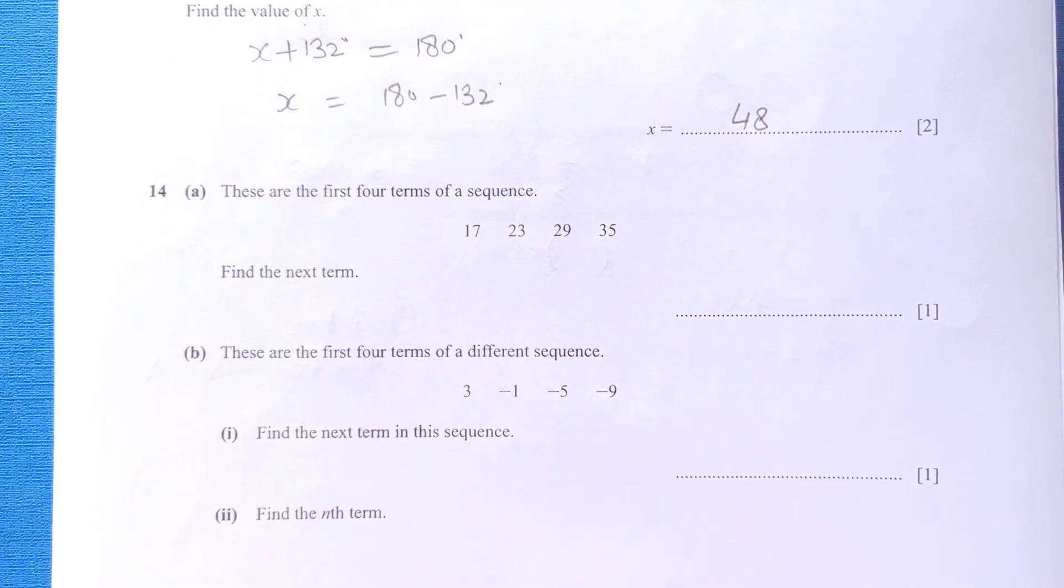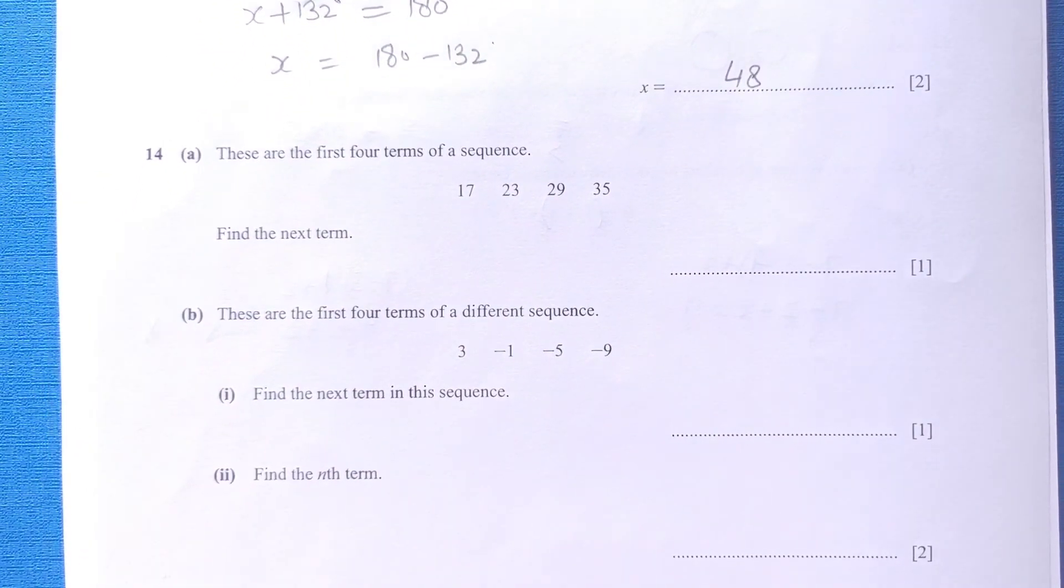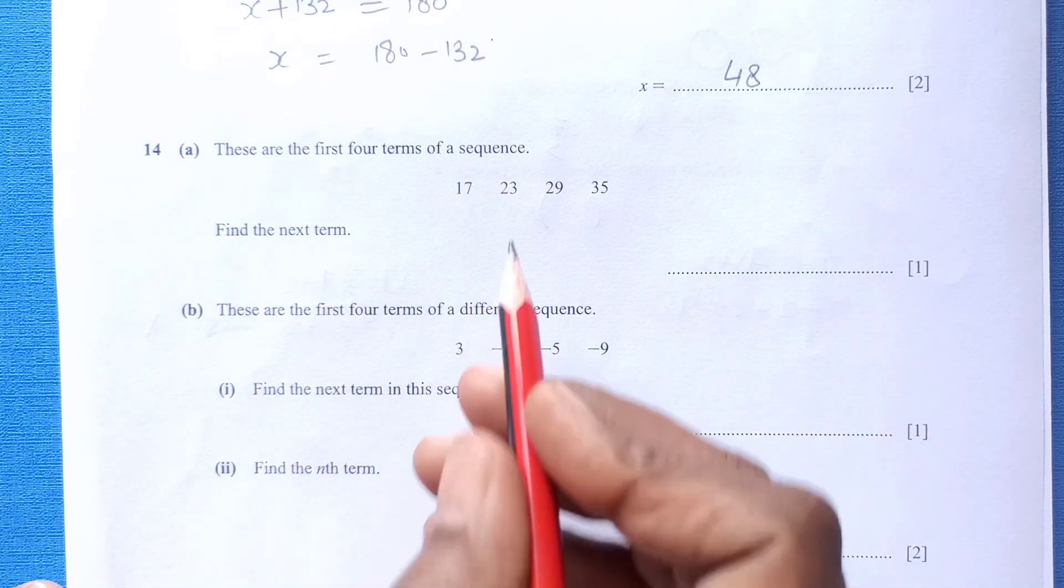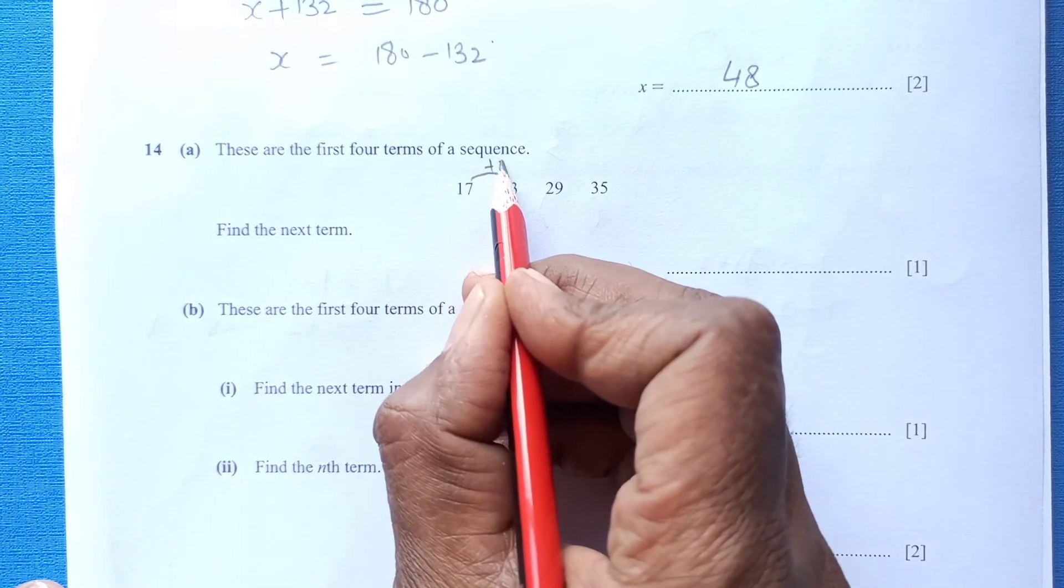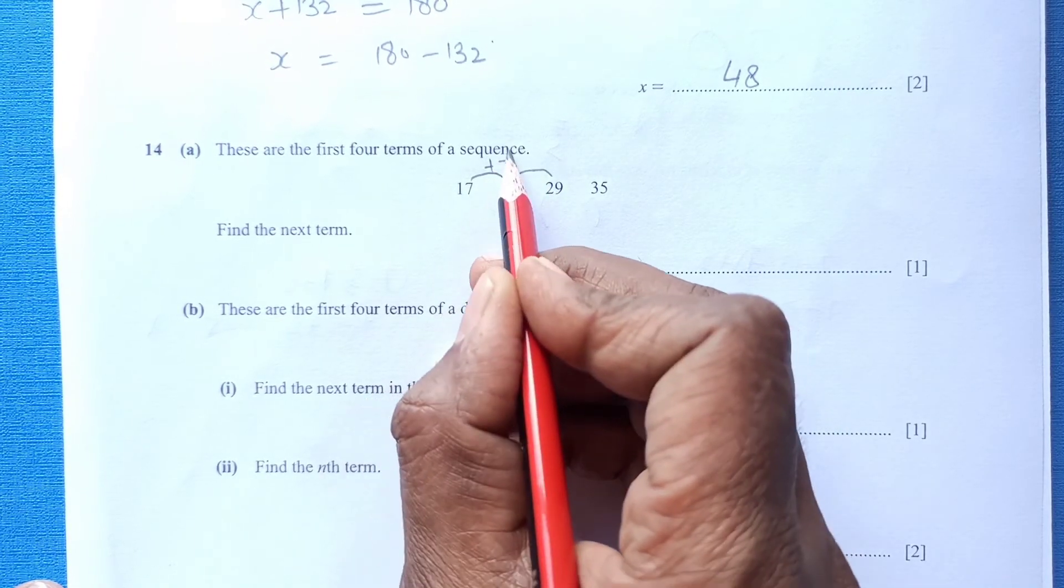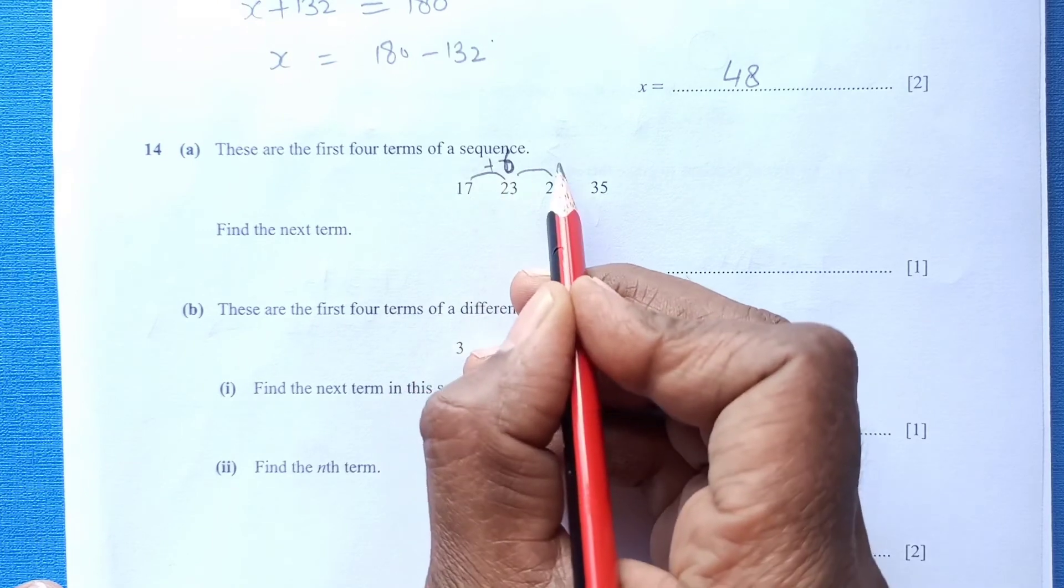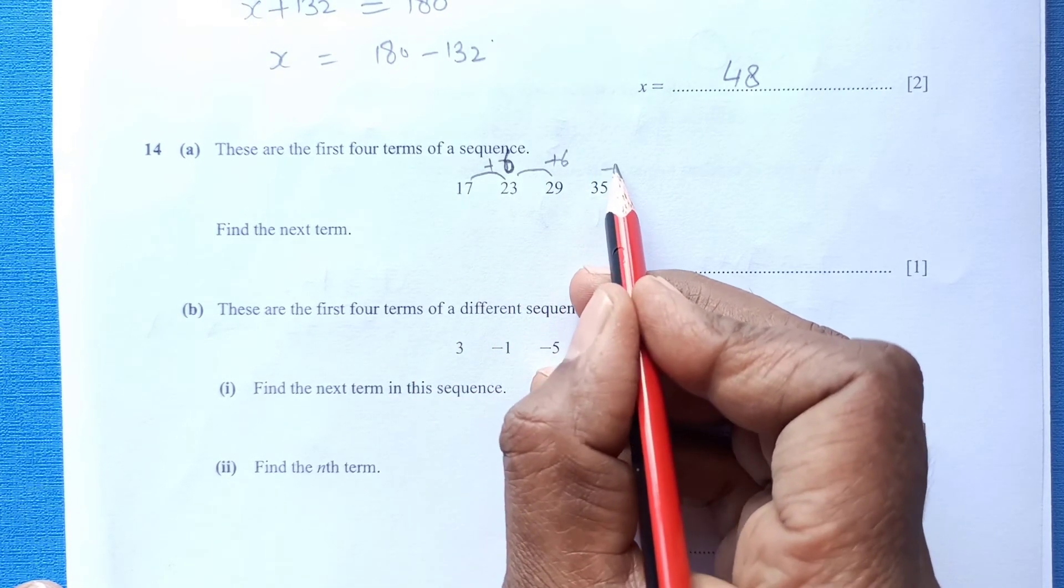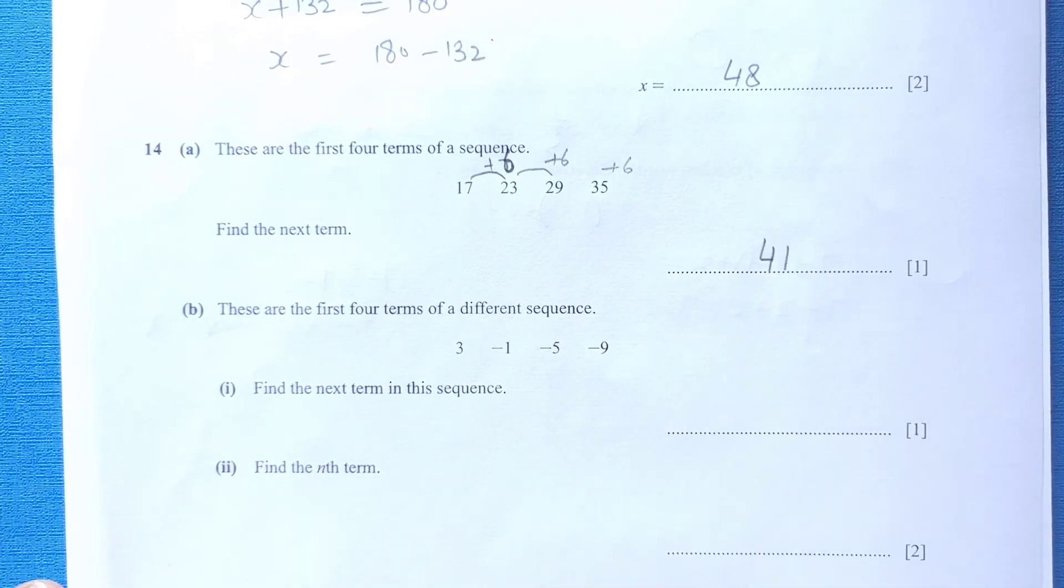14 part A: These are the first four terms of the sequence. Find the next term. We need to see the difference. You can see you are getting this 23, 6. You are getting by adding 6 here. 35 plus 6 will be 41.